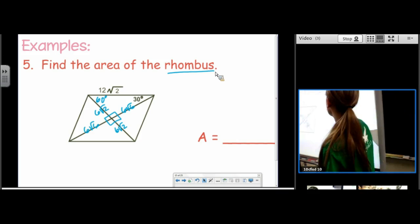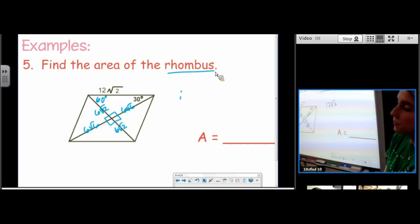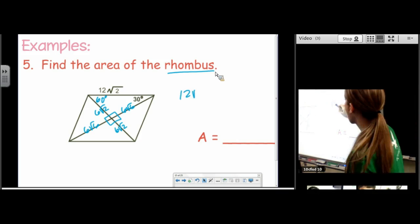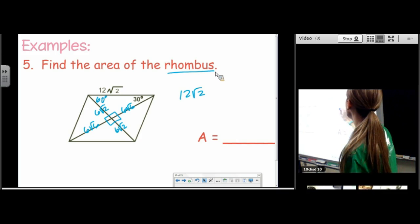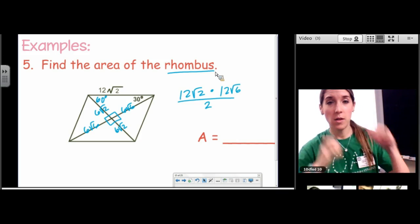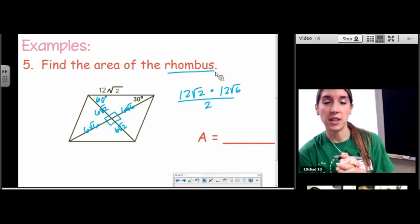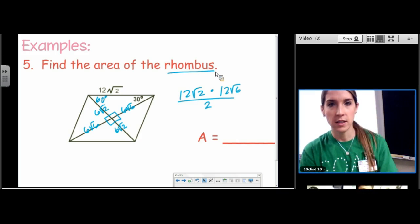Now, diagonal 1 is 12 root 2. It doesn't matter which one's diagonal 1 and diagonal 2. Diagonal 2 is 12 root 6. And then divide by 2. How in the world do we tackle this? Well, we work on just the integers first, the coefficients, so to say. 12 times 12 divided by 2.